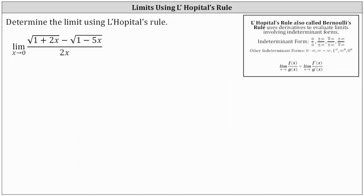We're asked to determine the limit using L'Hôpital's rule. Let's begin by checking the form. As x approaches zero, the numerator approaches square root of one minus square root of one, which is one minus one, or zero. And the denominator also approaches zero.